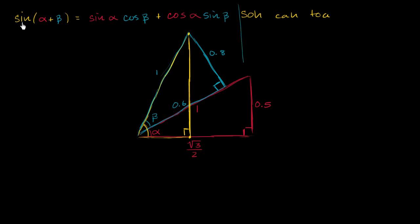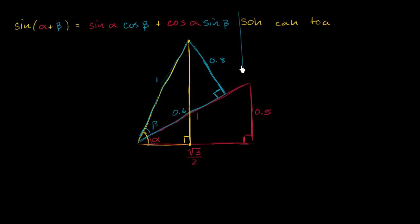So if we're trying to figure this out, and we know that this can be re-expressed this way, it all boils down to, can we figure out what sine of alpha is, cosine of beta, cosine of alpha, and sine of beta? And when you look at this, you see that you actually can figure those things out. So let's do that.